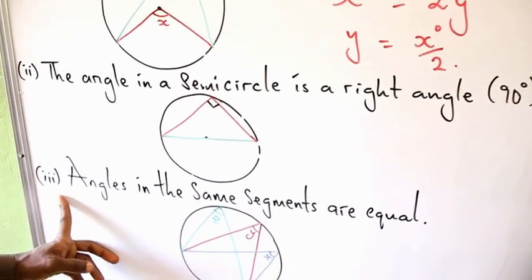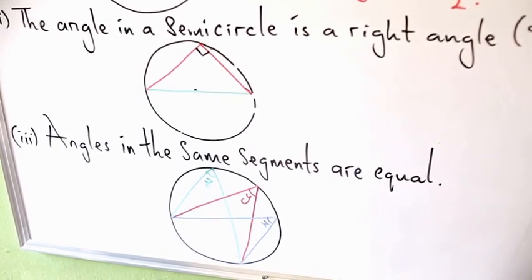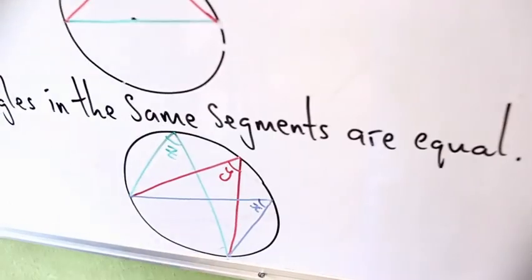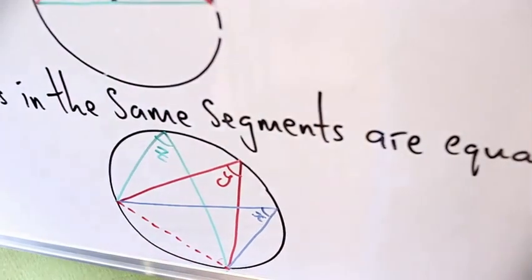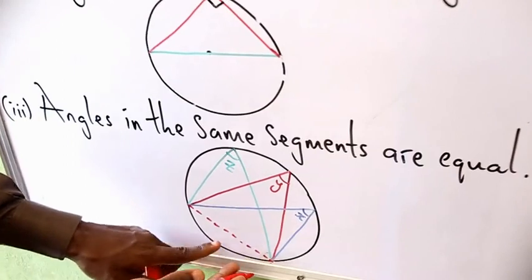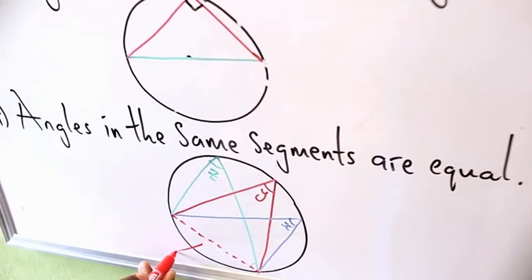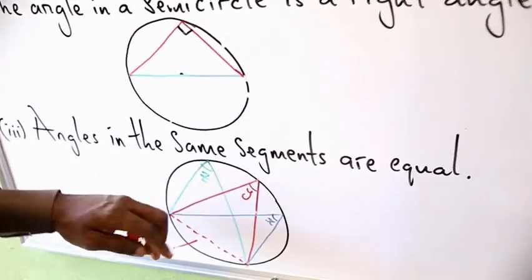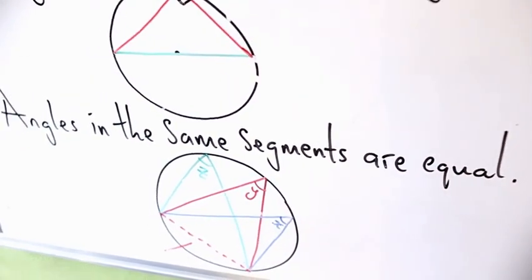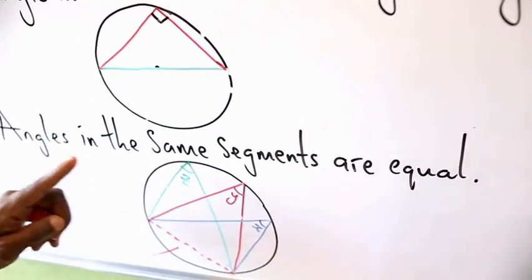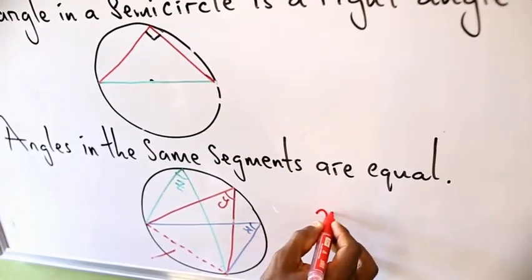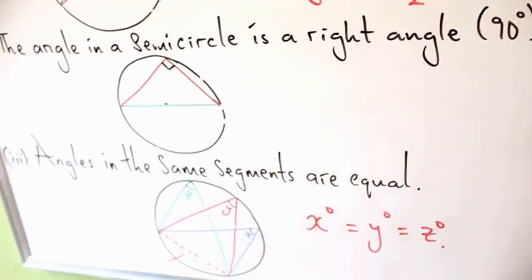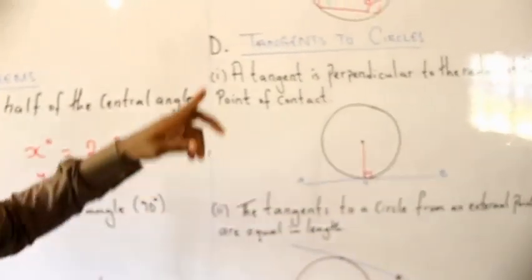The third theorem has to do with angles that lie in the same segment. A chord divides the circle into a minor segment and a major segment. All three angles x, y, and z lie in the major segment — as a result they have the same value. Angles in the same segment are always equal, so angle x equals angle y and also equals angle z.